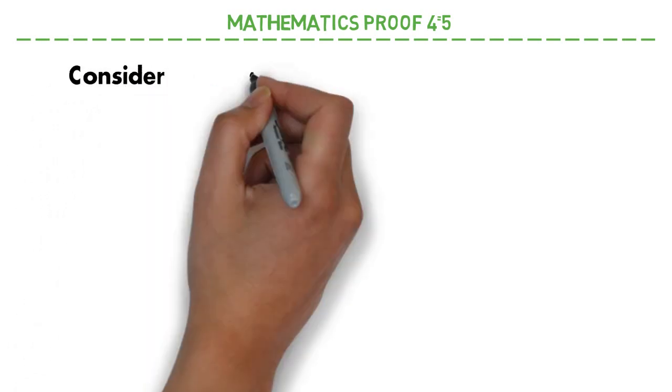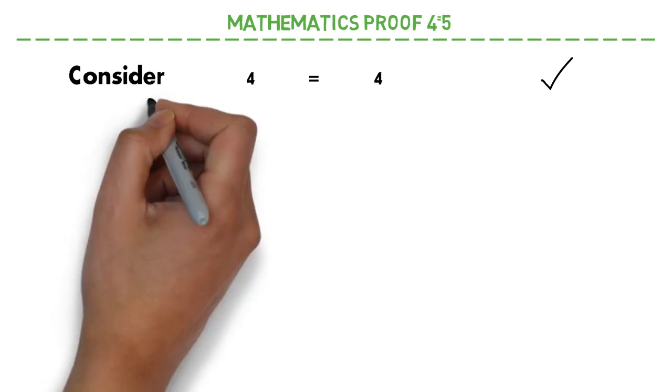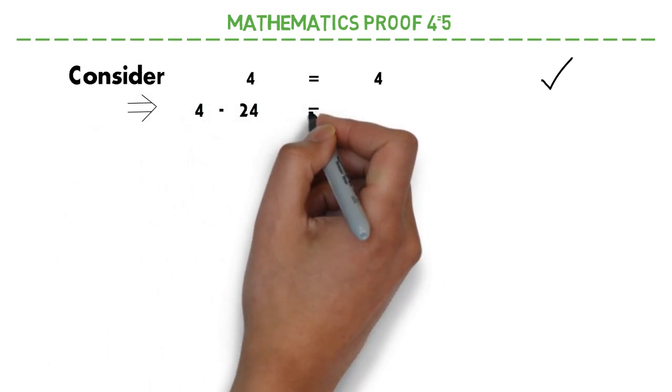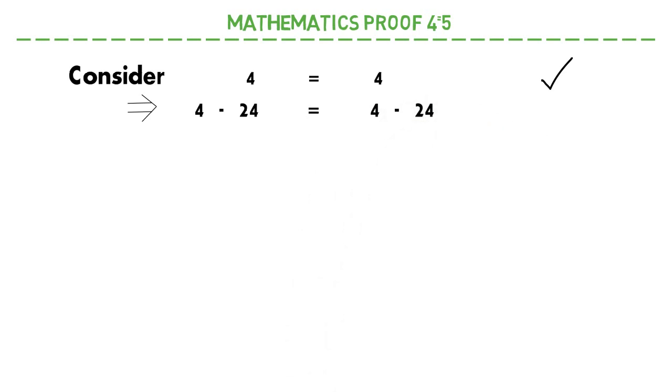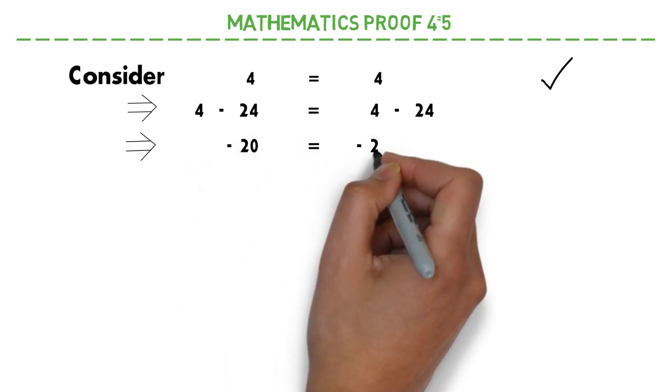Consider 4 is equal to 4. This is absolutely right expression. Now I am trying to manipulate this expression in different ways. If I subtract 24 from 4, I will have to subtract from left hand side and right hand side both. Now I get minus 20 is equal to minus 20. This is also right.